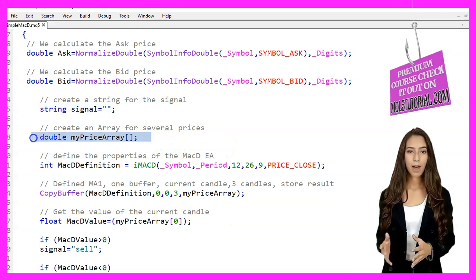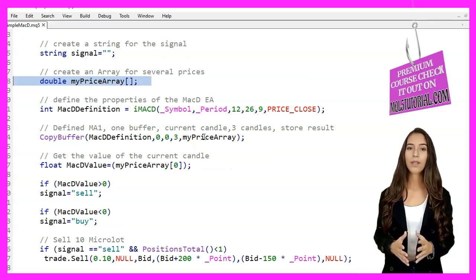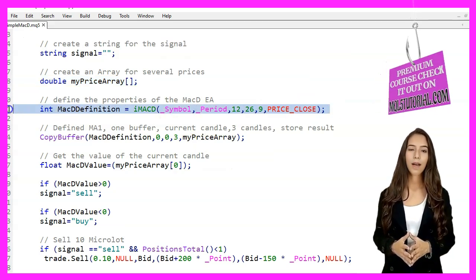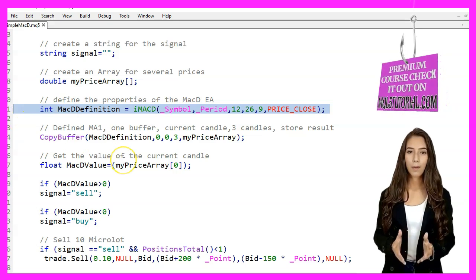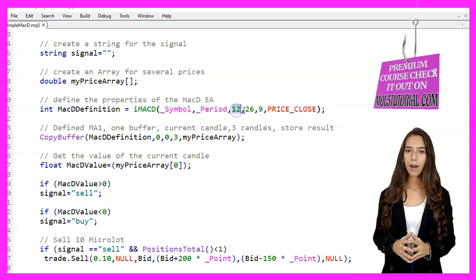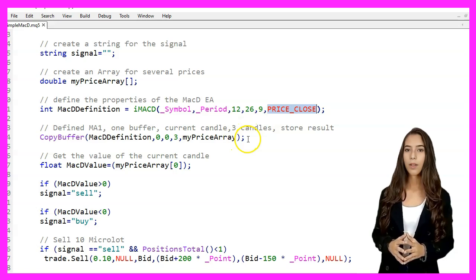We also create an array named MyPriceArray to hold several price values. To define the properties of the MACD indicator, we use the IMACD function.